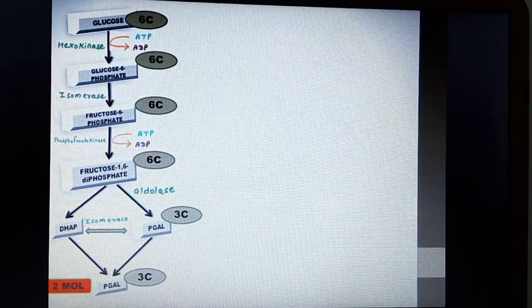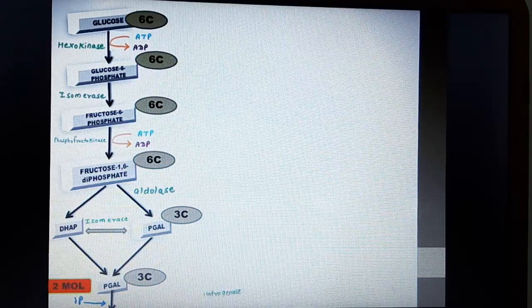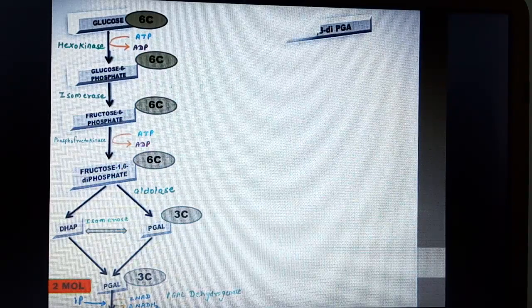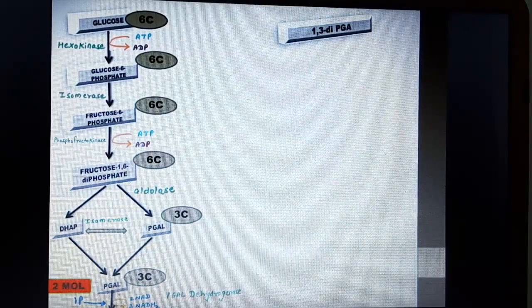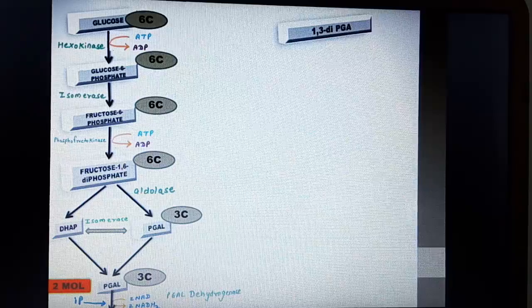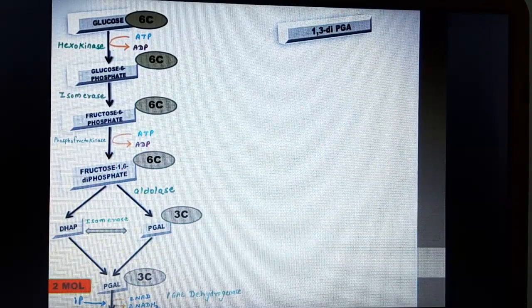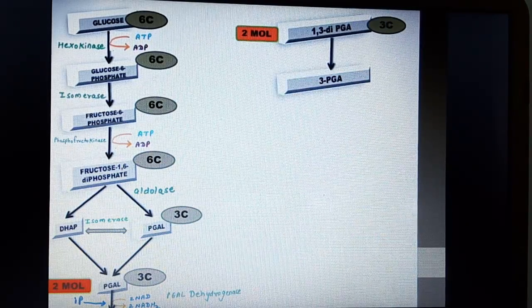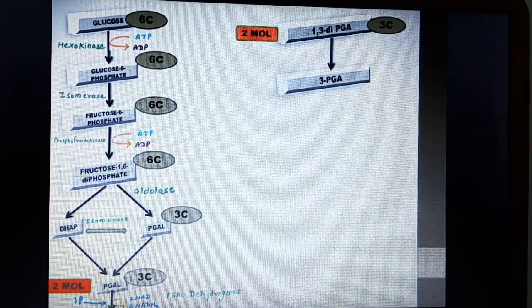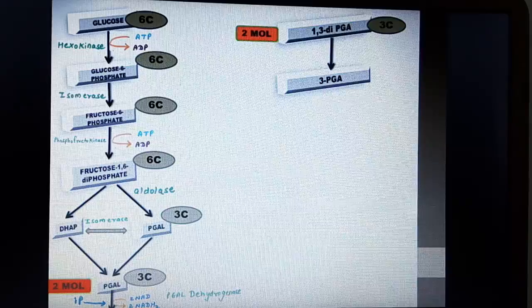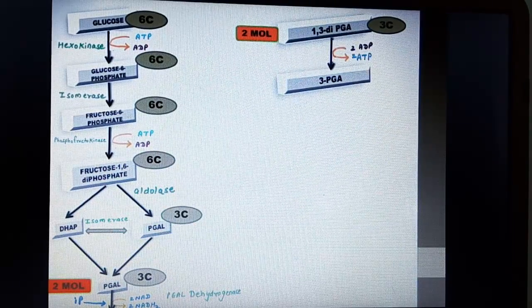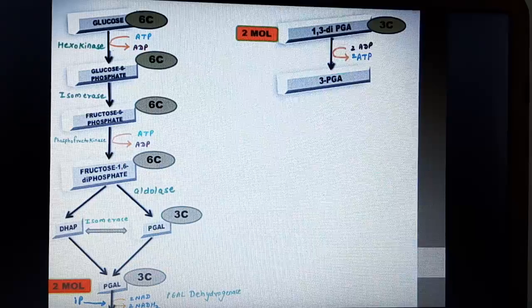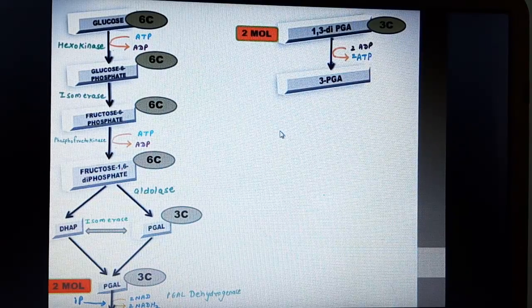Phosphoglyceraldehyde which is 3 carbon compound. Now PGAL undergoes oxidative phosphorylation in the presence of enzyme PGAL dehydrogenase and it forms 1,3 DIPGA. What is DIPGA? It is nothing but diphosphoglyceric acid. What is 1 and 3? The phosphate group is present on carbon number 1 and carbon number 3. 1,3 DIPGA undergoes dephosphorylation forming 3 PGA. Dephosphorylation means phosphate group is removed. So from the first carbon the phosphate group is removed therefore we are left with only 3 PGA. In this the phosphate lost by the PGA goes to ADP and it forms ATP. As you can see I have mentioned 2 ADP because there are 2 molecules involved and it takes place in the presence of enzyme PGA kinase.